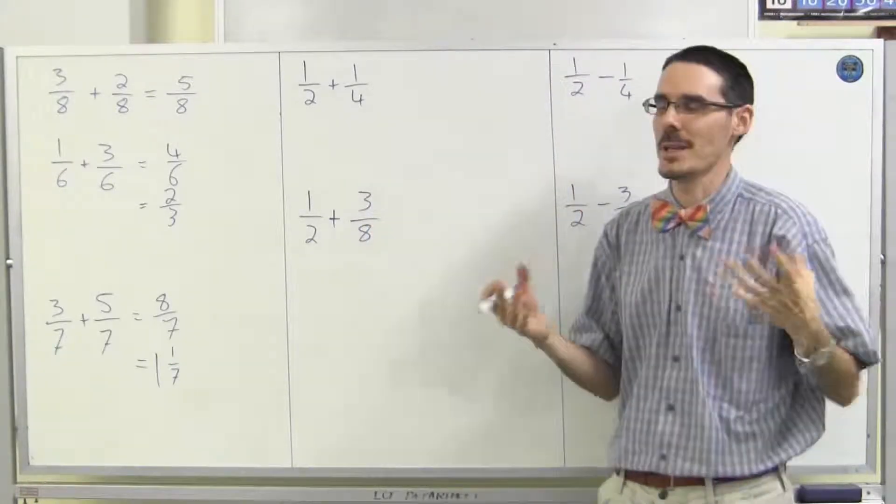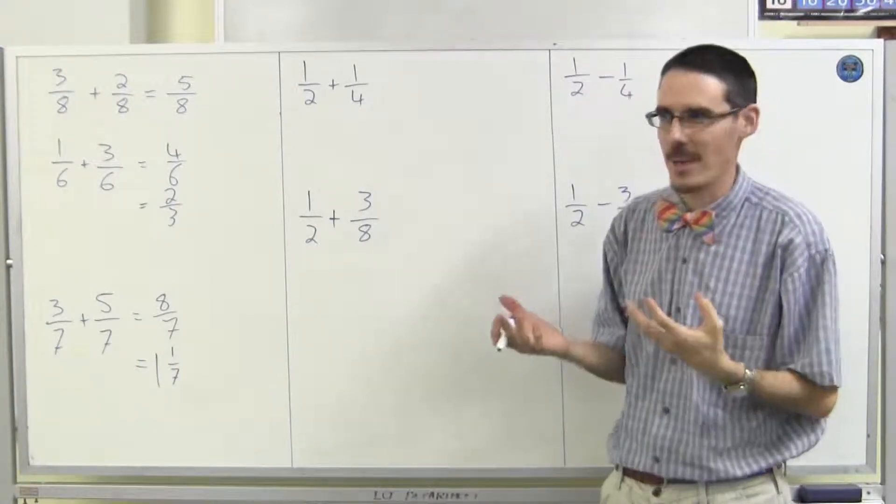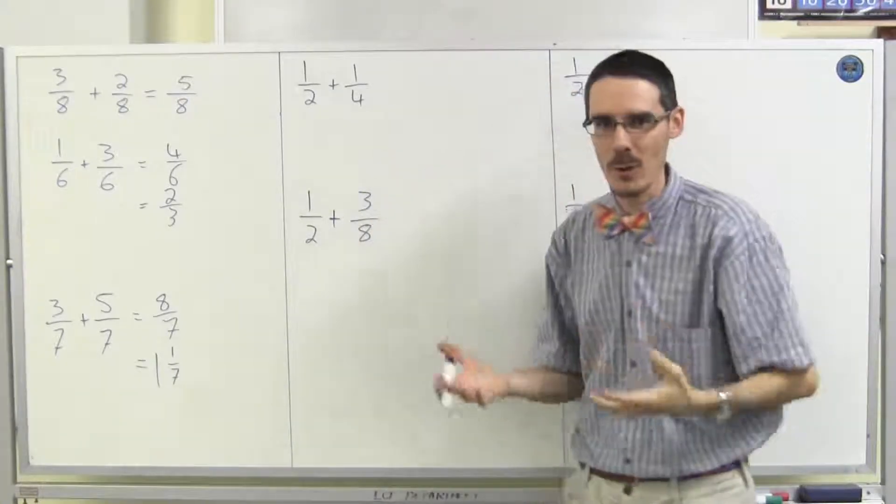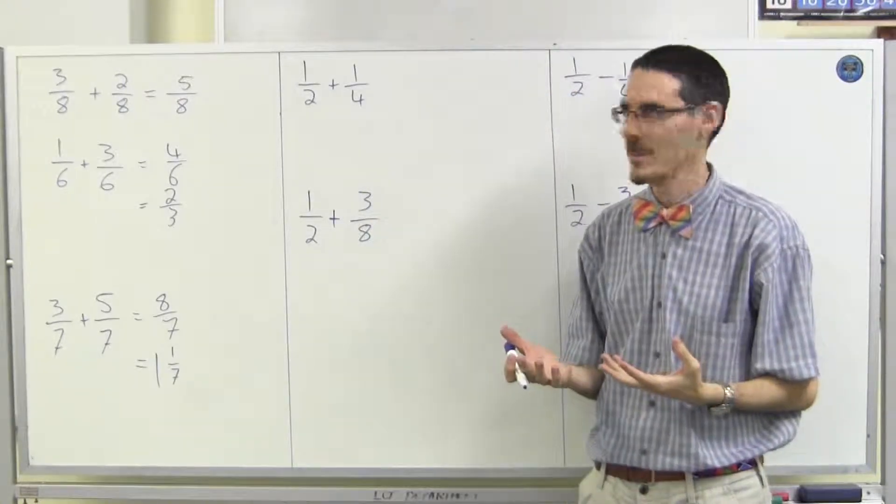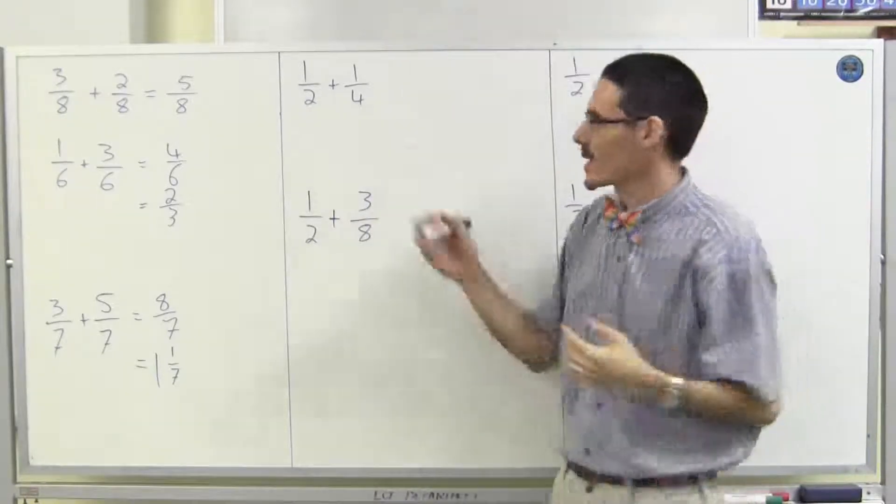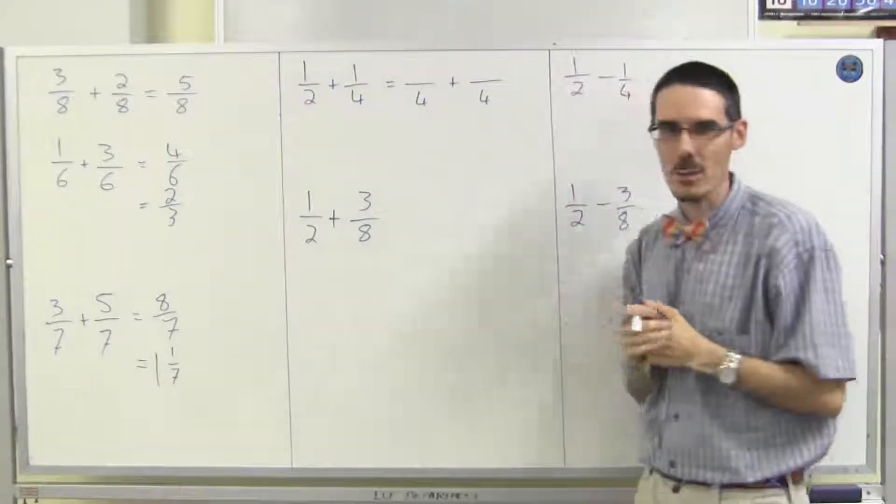Now, again, we already know it's four, but how would you work that out? Well, the technique I recommend is you start with the bigger number and you go up in multiples of that bigger number. So, the four, does two go into four? Yes, it does, so four will work. And I want to write both fractions as quarters.